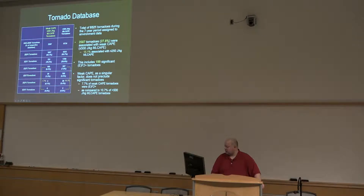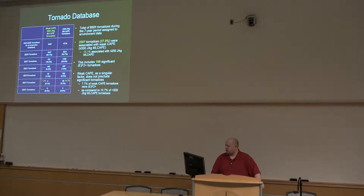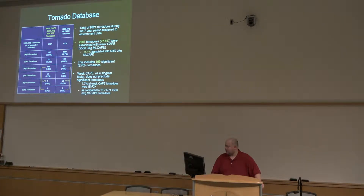Of the over 2,500 tornadoes involved in this study, we found basically close to 28% were associated with weak CAPE. It's a relatively low percentage overall, but over roughly a seven-year period that's a lot of tornadoes to contend with — a lot of missed tornadoes if you're constrained to only 500 joules per kilogram. And it does include nearly 200 significant tornadoes, EF2 and greater.